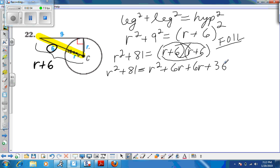So let's combine like terms on the right side. So I have r squared plus 81 equals r squared plus these two combined for 12r plus 36.